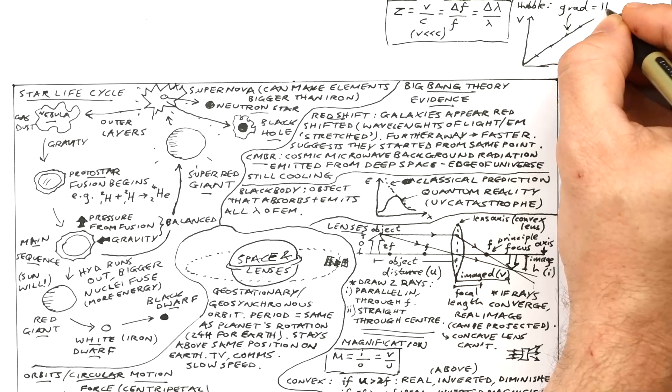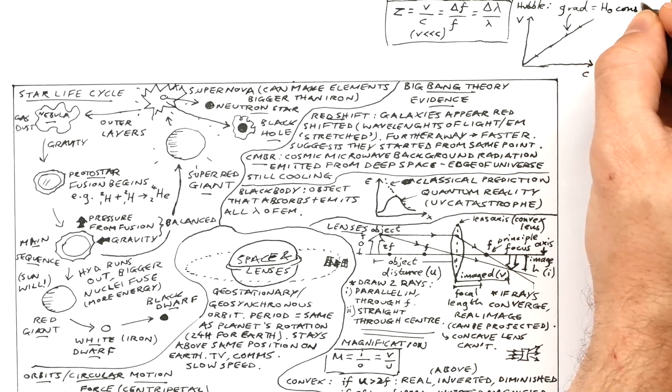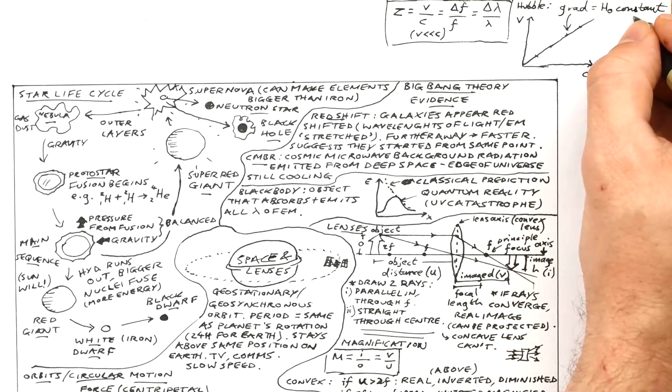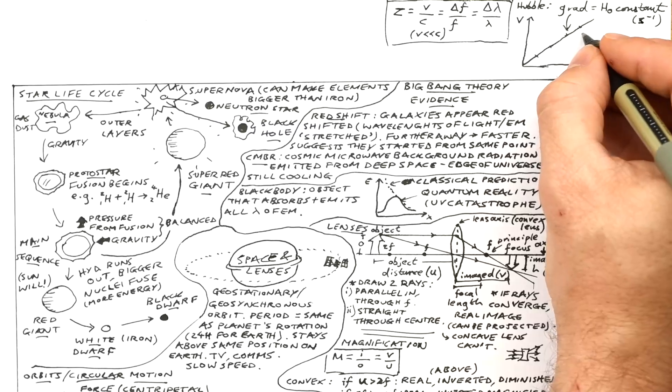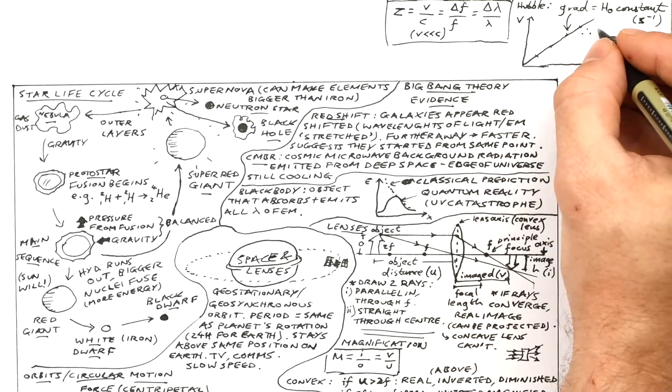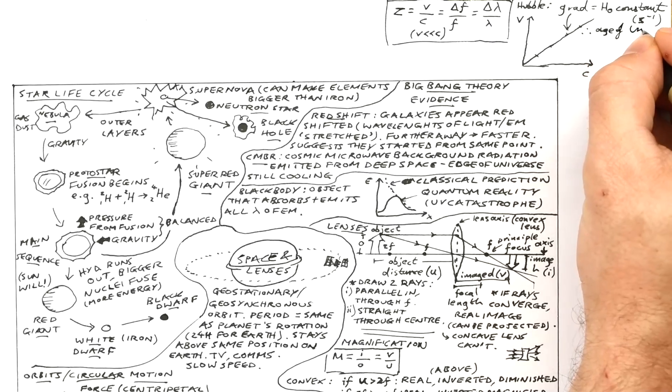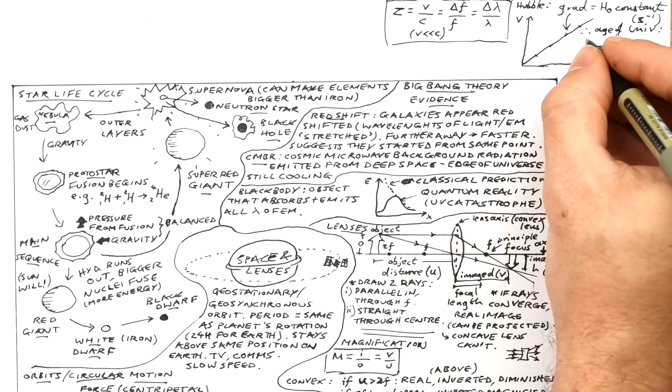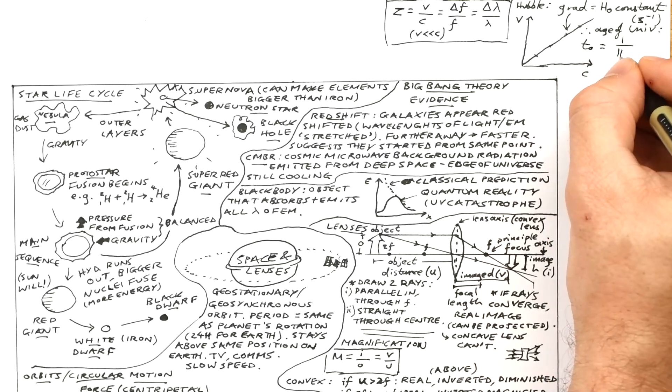Here's the Hubble graph. If we draw a graph of V against D, we can see that the further galaxies are away from us, D, the faster the recessional velocity V. So we can see that most galaxies line up along this line. And so we have a constant. The gradient is equal to the Hubble constant. And the unit of that is seconds to the minus one. So therefore the age of the universe theoretically is given by the reciprocal of that.